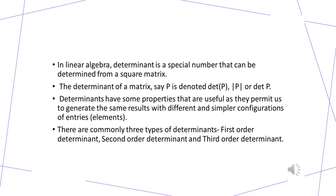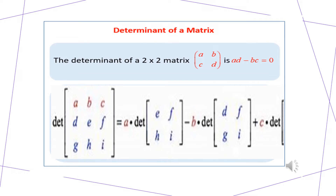We will be looking into all these in this video. Here you can see a second-order determinant and a third-order determinant. A second-order determinant is also known as a determinant of a 2×2 matrix. You are given a matrix ABCD, where AB is the first row, CD is the second row, AC is the first column, and BD is the second column. The number of rows and columns are equal. To simplify the determinant of a 2×2 matrix, you cross multiply: AD minus BC.